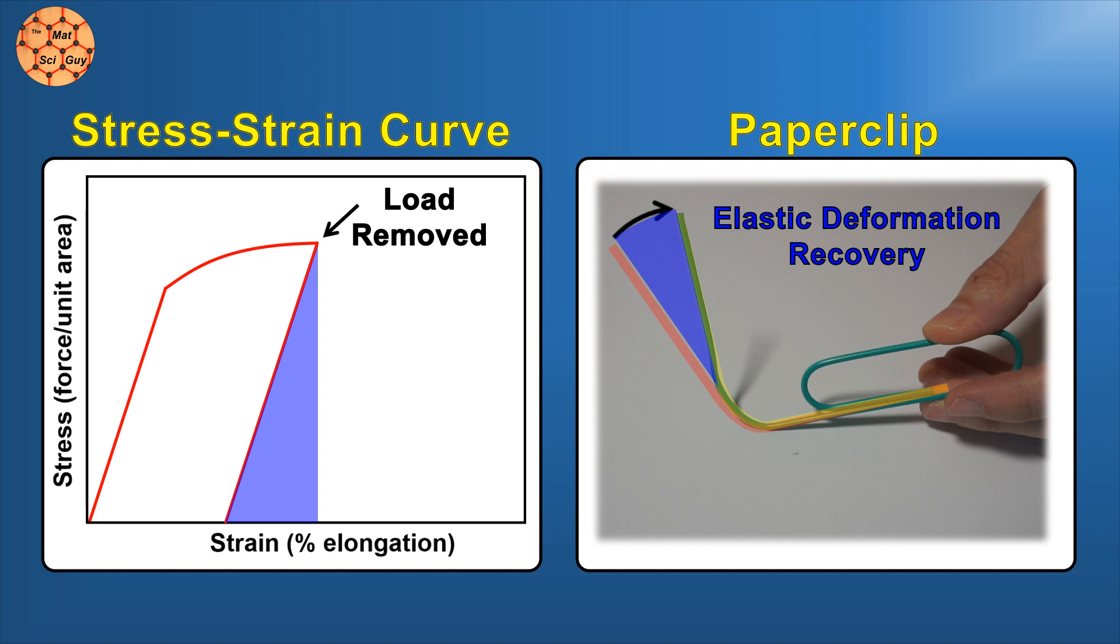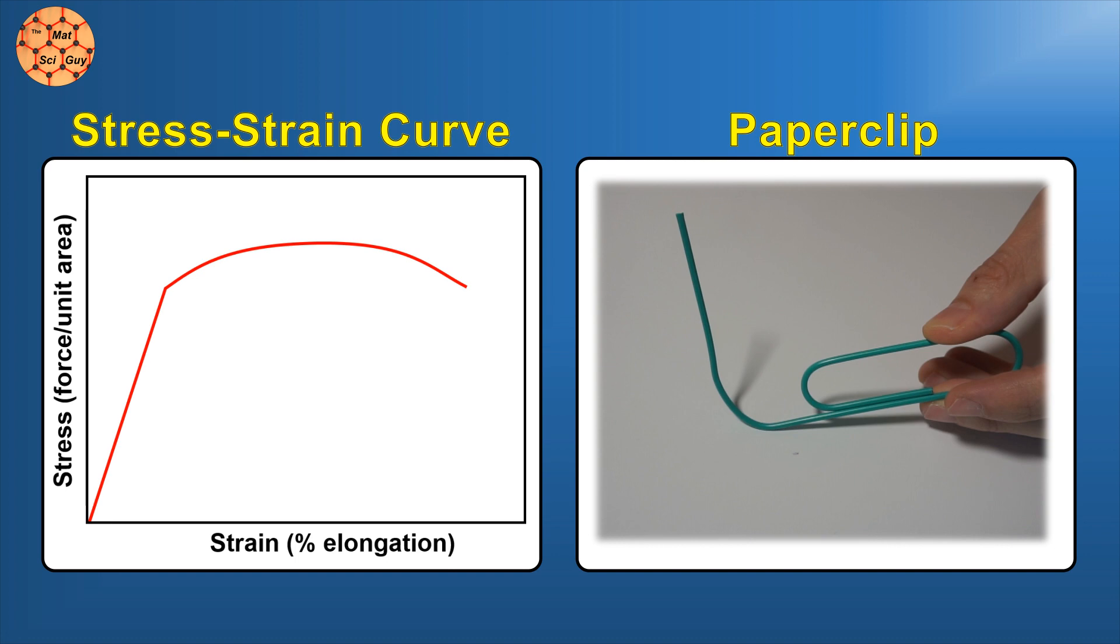Now, obviously this isn't a perfect analogy. We are looking at a stress-strain curve in tension but performing a bending test, and we also haven't accounted for the geometric complexity of the paperclip. Nevertheless, the underlying principles are still true.